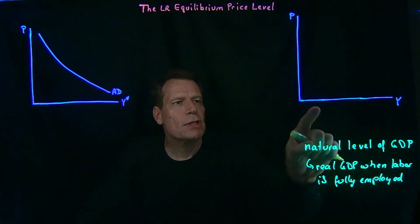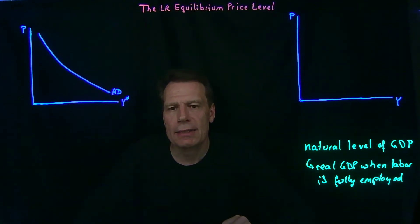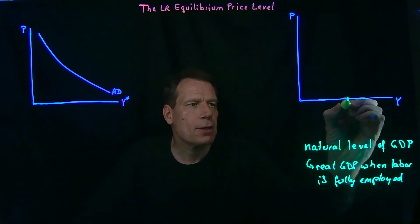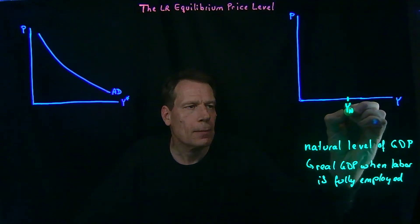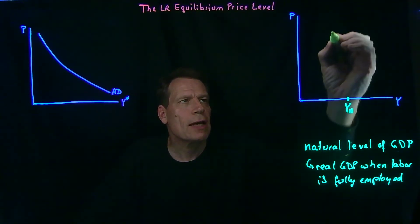That natural level of GDP can be measured somewhere on this axis. So suppose that it's here. In the long run, we'll reach that level of GDP.